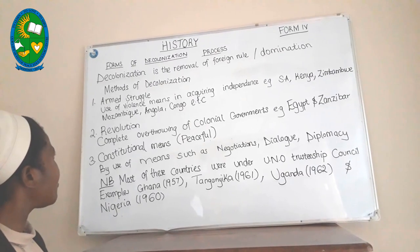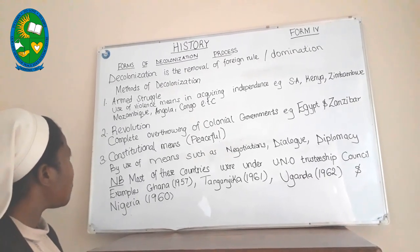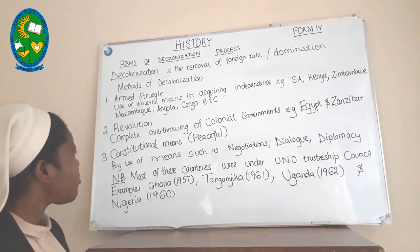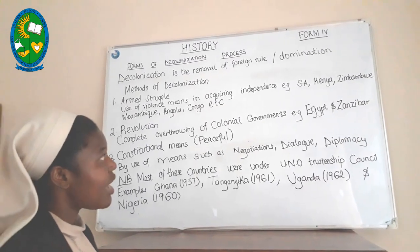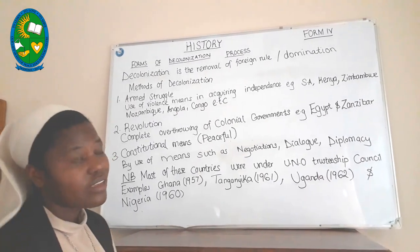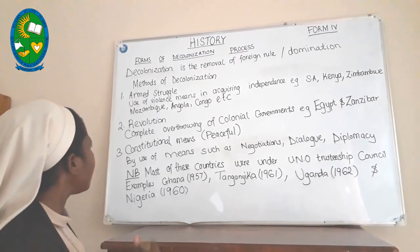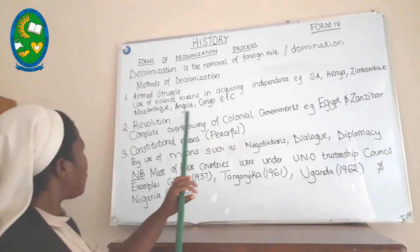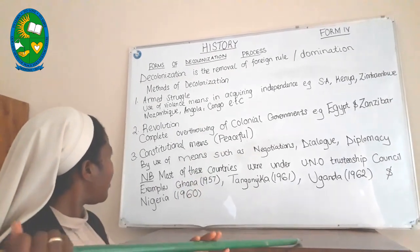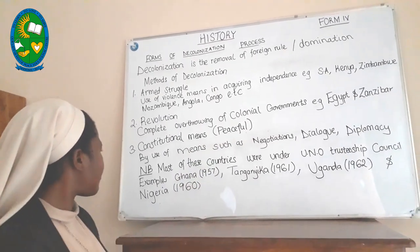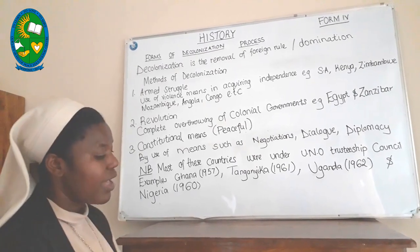Examples of African colonies where armed struggle was used include South Africa, Kenya, Zimbabwe, Mozambique, Angola, and Congo, among others.